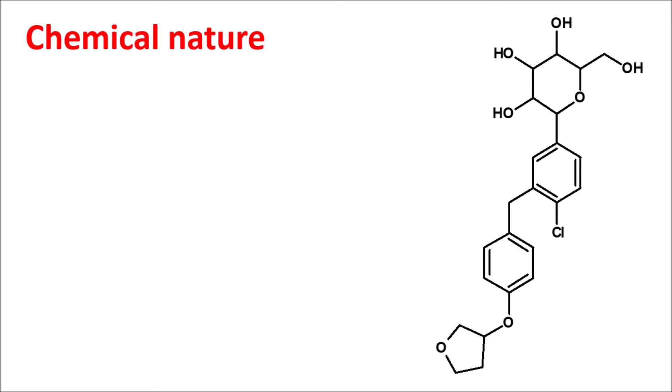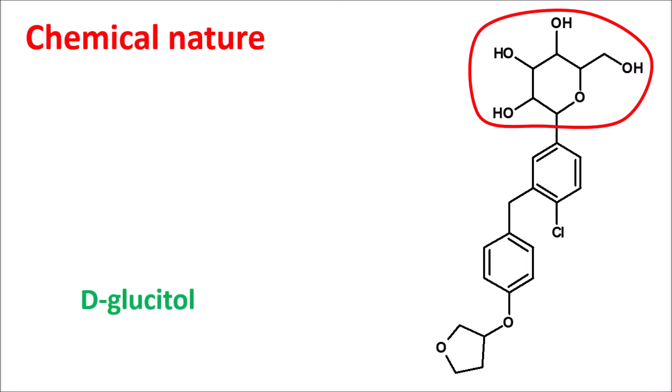Now let us discuss the chemical nature of empagliflozin. Looking at its structure, we can observe a ring that is a glucose-related moiety — specifically deglucitol. To this deglucitol, a phenyl ring is attached. Giving numbering to the glucitol: position 1 and position 2. Giving numbering to the phenyl ring: positions 1, 2, 3, and 4.